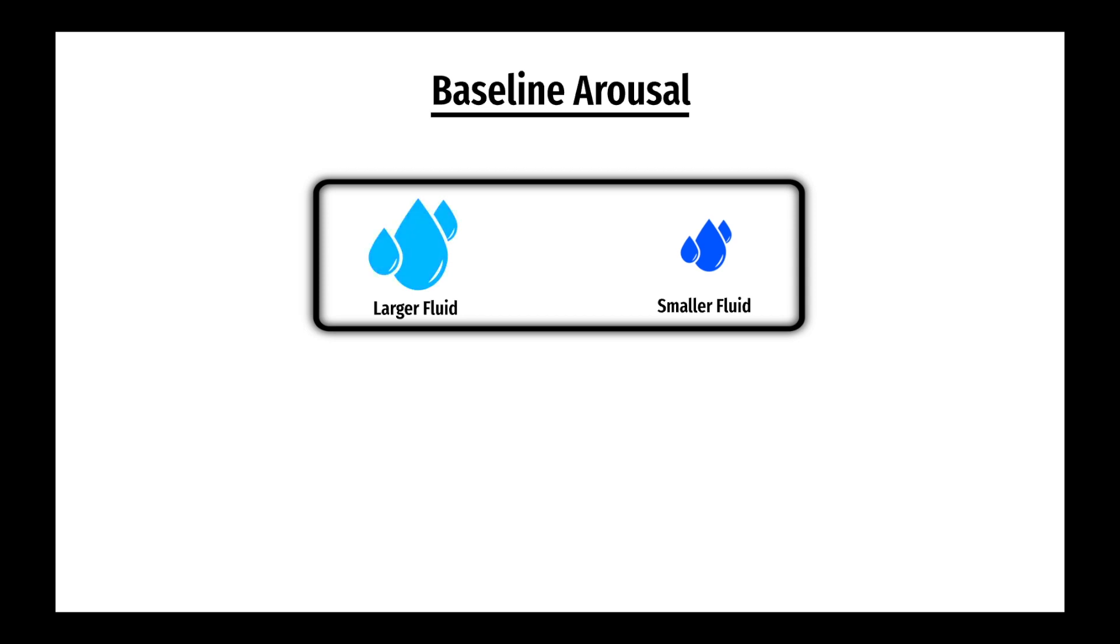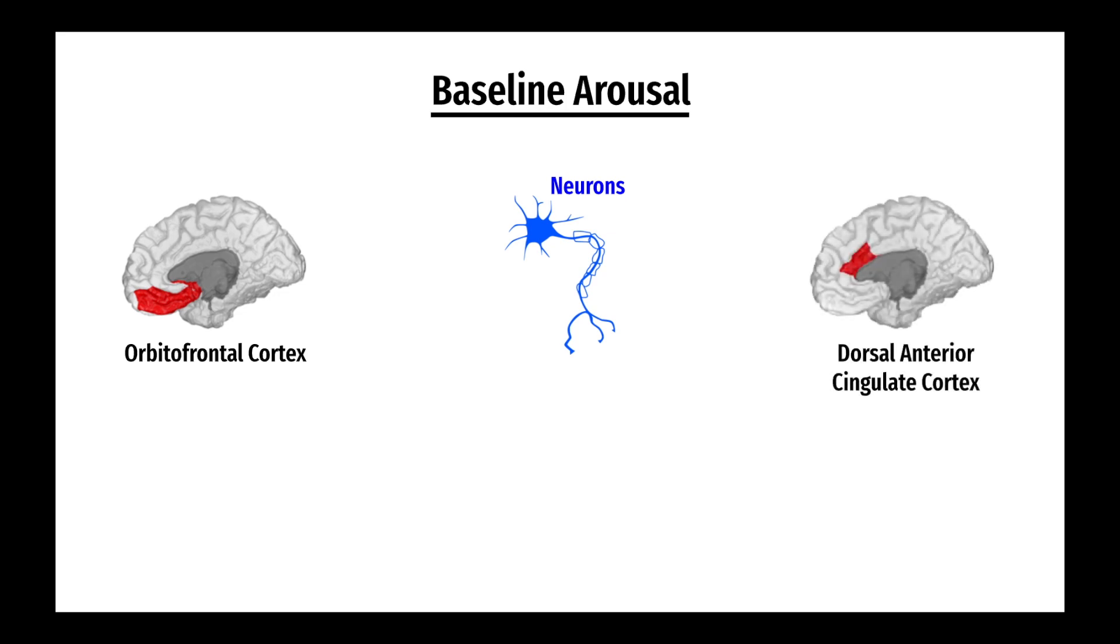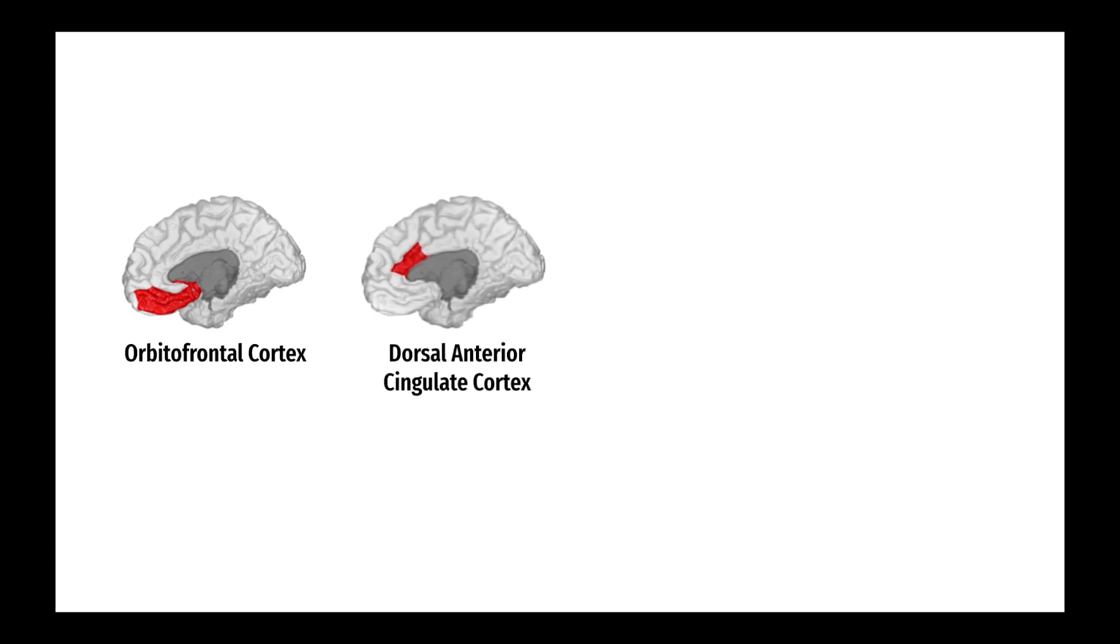At baseline, the researchers found that the monkeys consistently chose the larger fluid amount and that this decision was made faster when their heart rate was higher. They also noticed that some of the neurons in the orbitofrontal cortex and dorsal anterior cingulate cortex would change in activity depending on heart rate. If the heart rate changed, the activity of a select number of neurons would also correspondingly change. This suggests that within these brain regions, some neurons were tasked with decision-making while others may focus on bodily arousal.